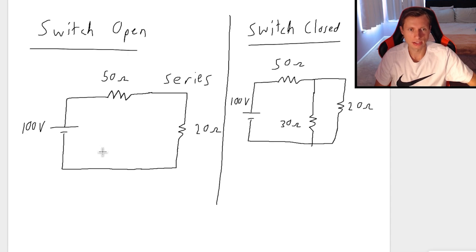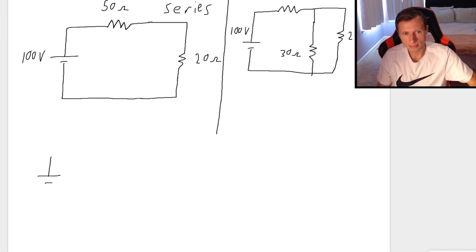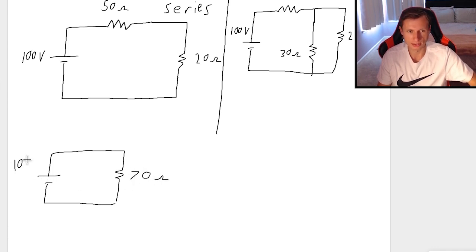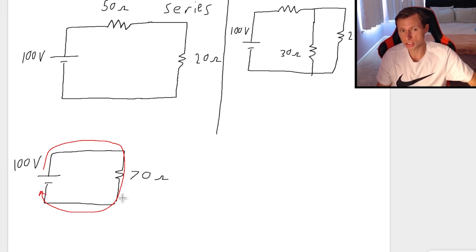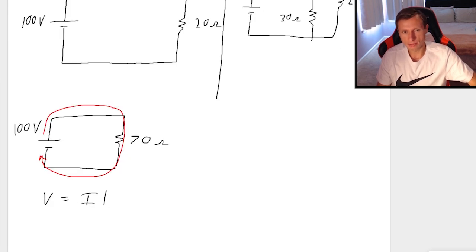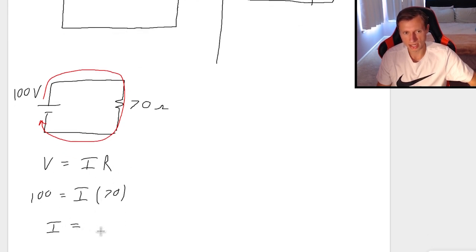Now we're going to find voltage, current, and power on the open switch circuit. I see the two resistors are in series, so I can combine them to form one single resistor. That resistor would be 50 plus 20, so 70 ohms. Now I can find the current going through not just the resistor, but the whole circuit, because current is the same in series. Using V equals IR — Ohm's law — for the whole circuit: that's 100 volts over 70 ohms, giving me 1.43 amps.